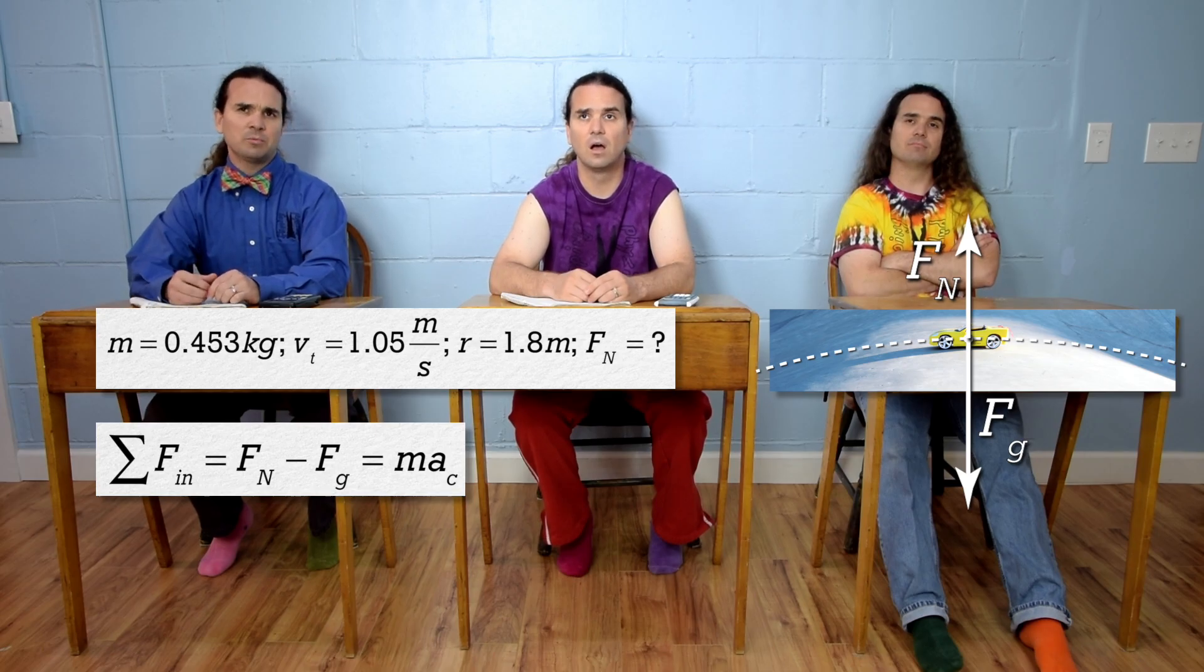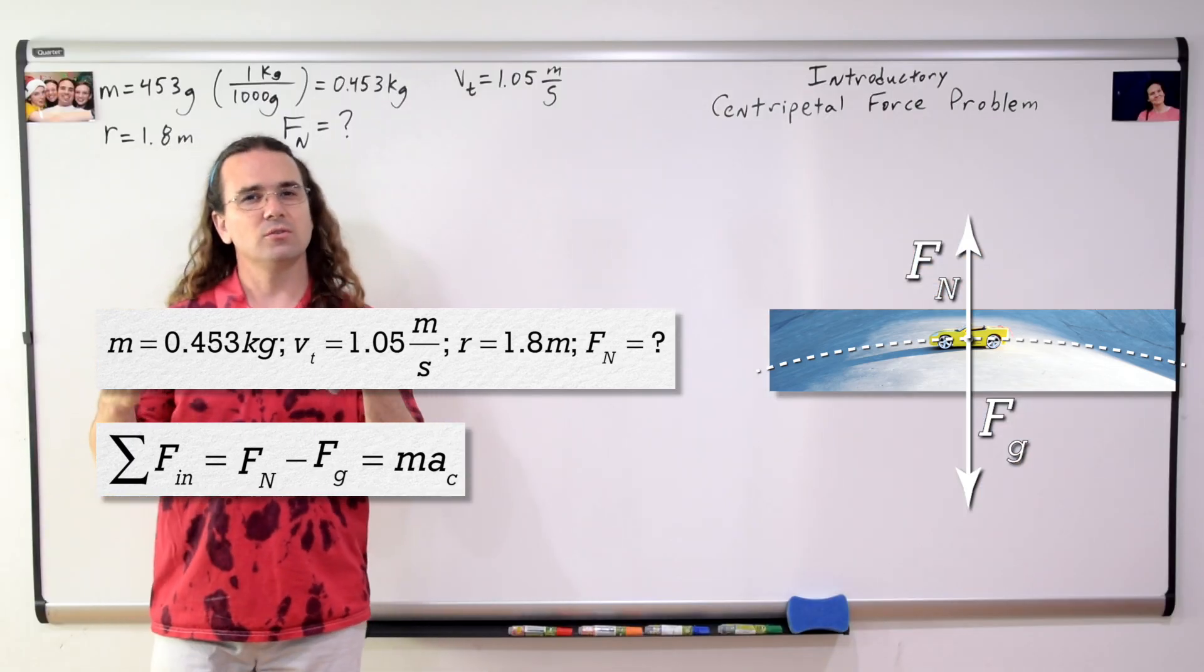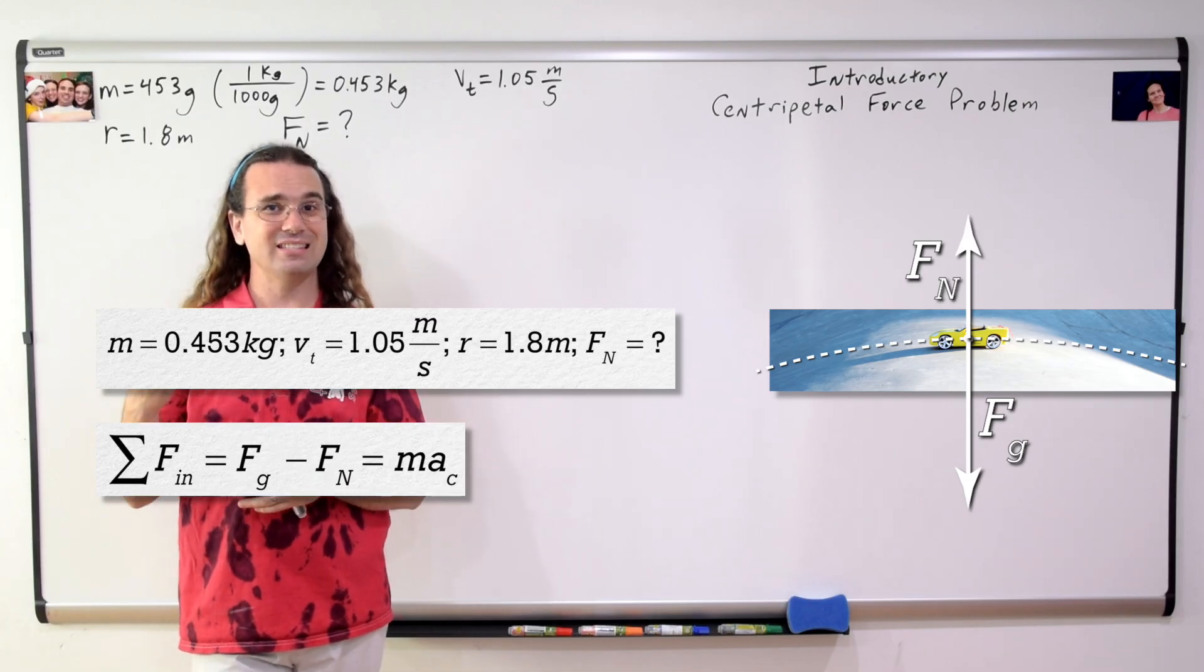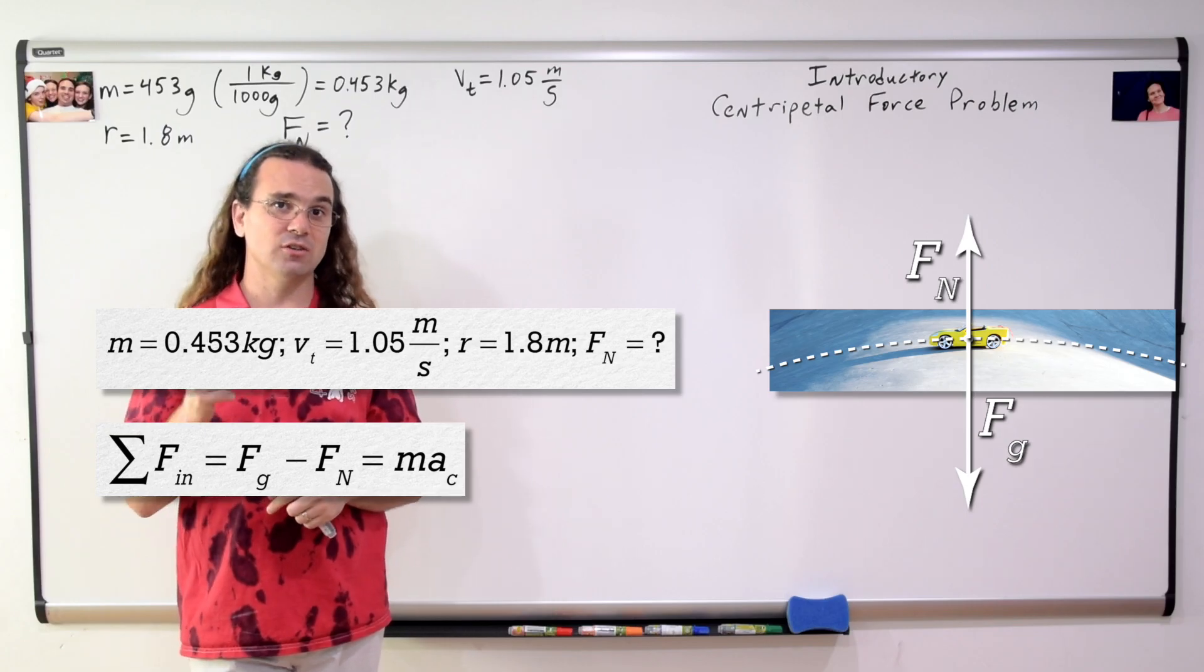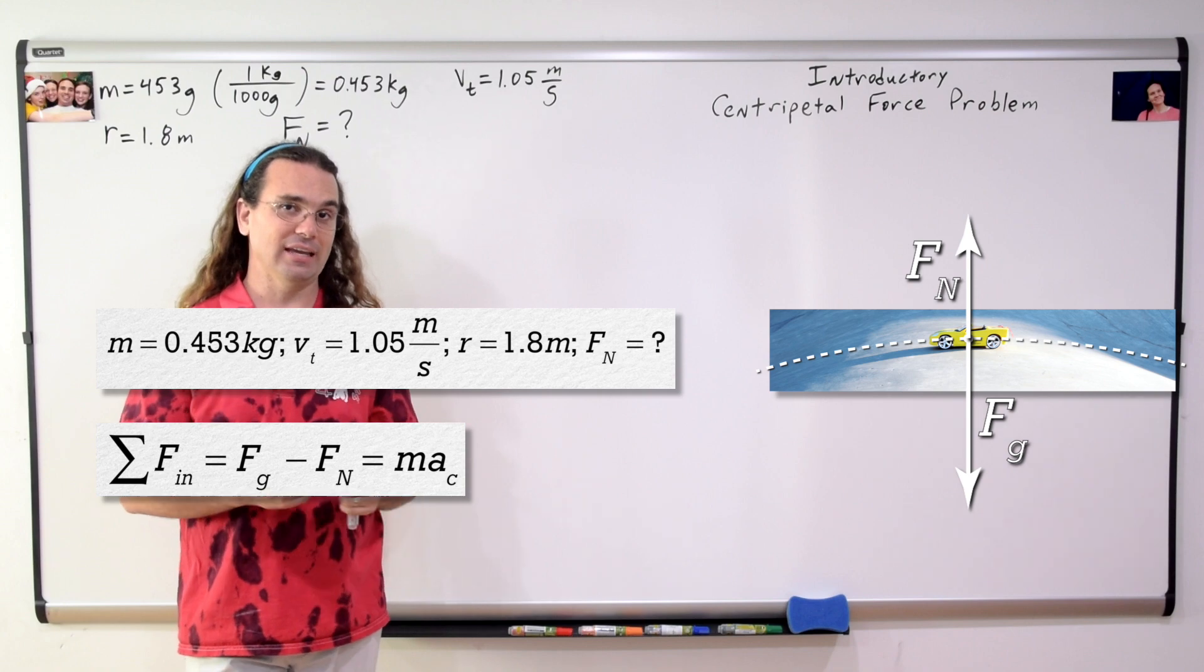I thought in was positive and out was negative. So, the force of gravity should be positive and the force normal should be negative, right? That is correct. Students are so used to summing the forces in the y direction that this is a common mistake. Remember, we are summing the forces in the in direction. And inward is positive and outward is negative.